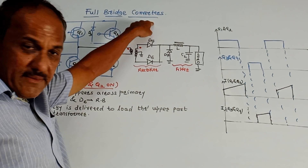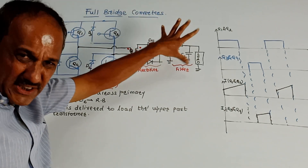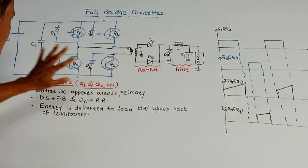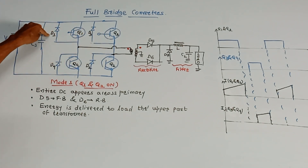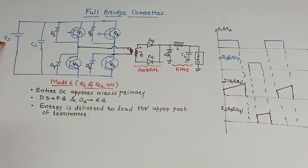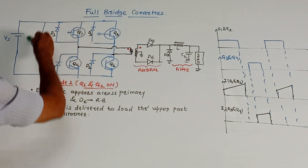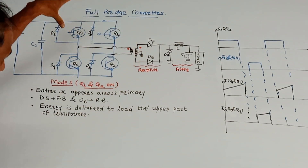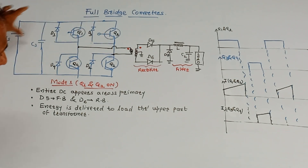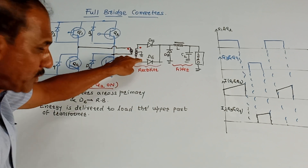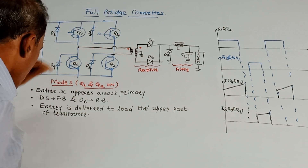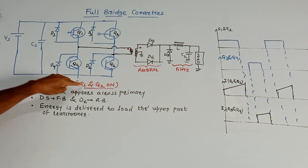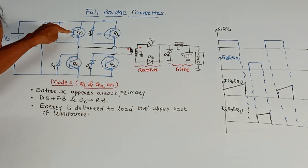The next topic is the full bridge converter. This is the circuit diagram. We use four transistors — Q1, Q2, Q3, and Q4 — with diodes D1, D2, D3, and D4 connected in parallel with each transistor. Capacitor C1 is at the input side, and VS is the DC supply. These four transistors and diodes act as an inverter, converting DC to AC, which is then applied to the transformer.